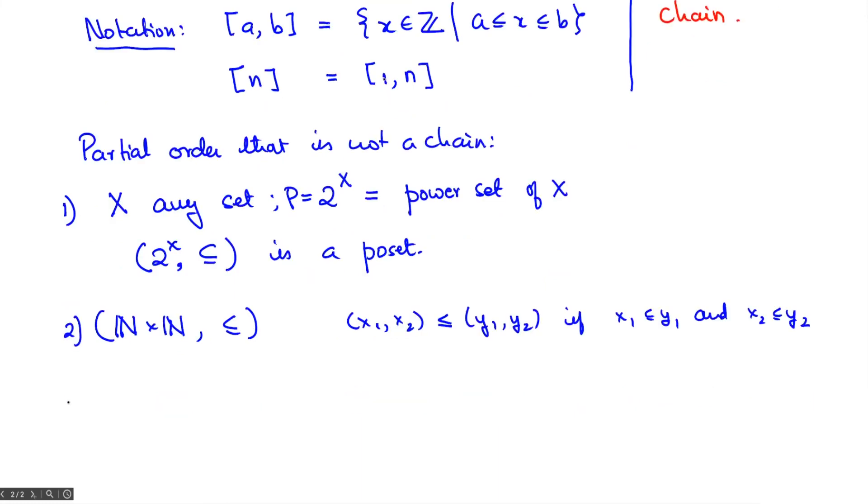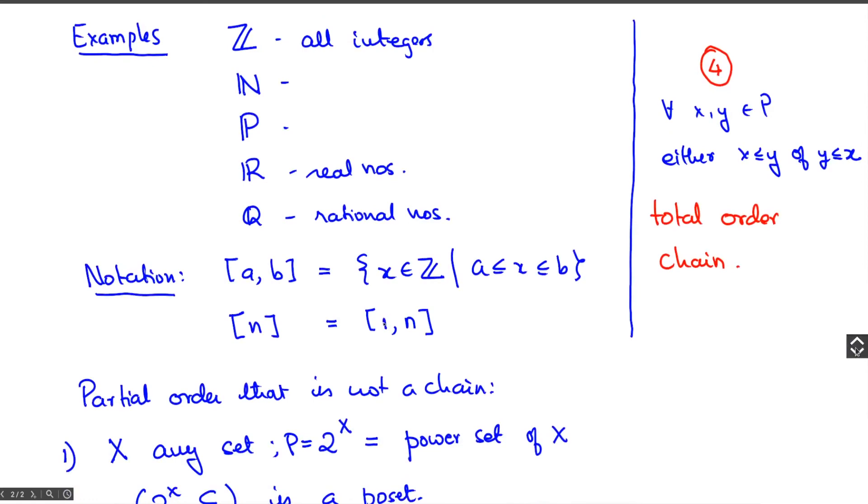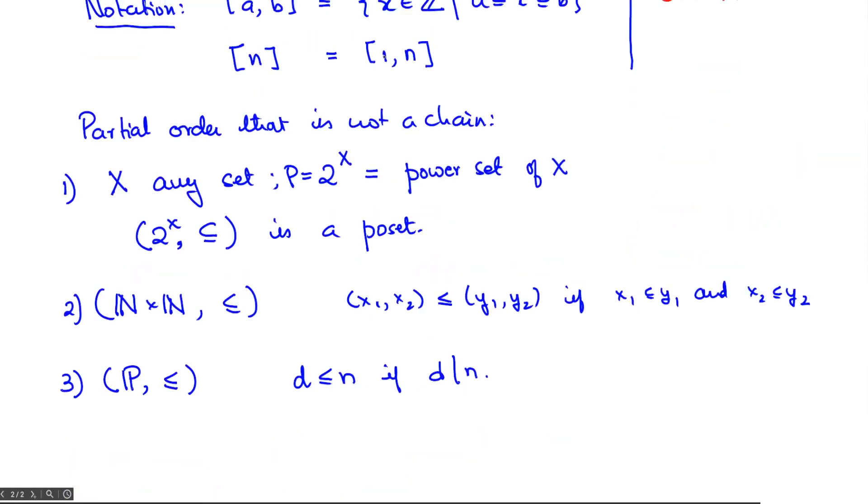Another very important example which comes from the previous lecture: you look at P, the set of positive integers, and I'll say that d ≤ n if d divides n. Now it's true that x divides x for every positive integer x. If x divides y and y divides z, then x divides z. Also, if x divides y and y divides x, then x = y, provided x and y are positive integers. So certainly this is a partially ordered set, but you could take the integers 3 and 4—neither does 3 divide 4 nor does 4 divide 3. So this does not satisfy the condition for being a chain.